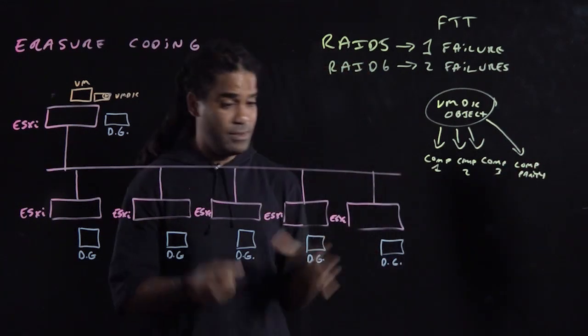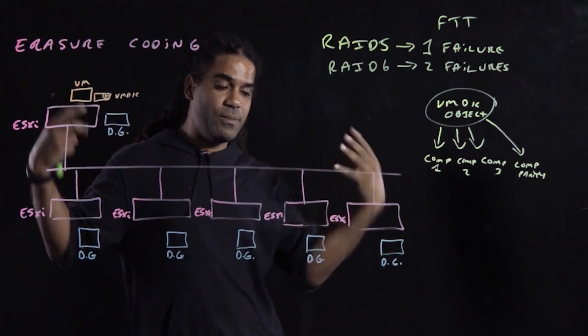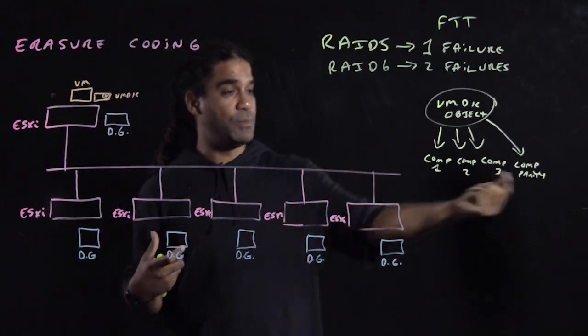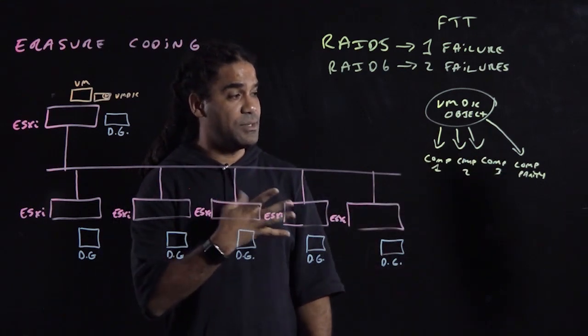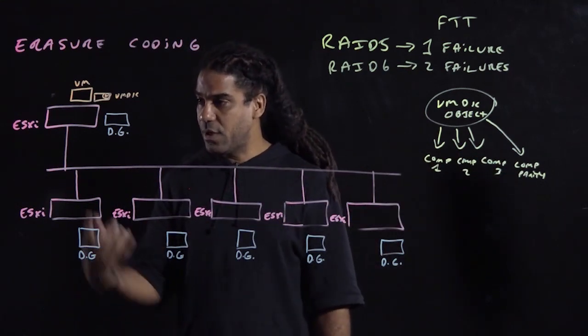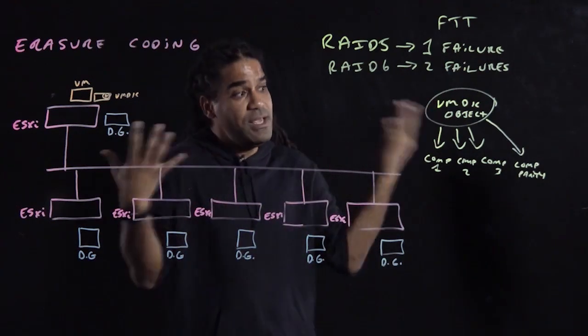So now vSAN will go and look at the vSAN cluster and say, do I have three domains, three entities that we can place those components to? In this case, I'm sorry, four entities. So we're looking for four hosts. That means we can go here, here, here, here, here, here, or here. Any of them would do.